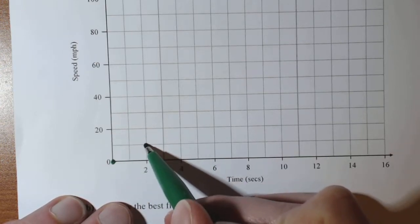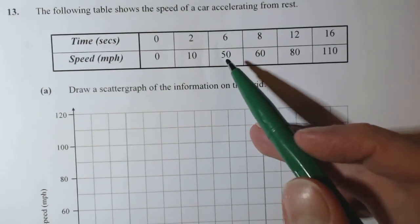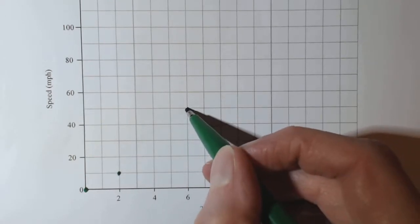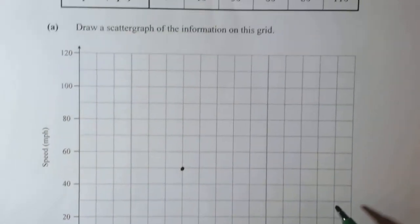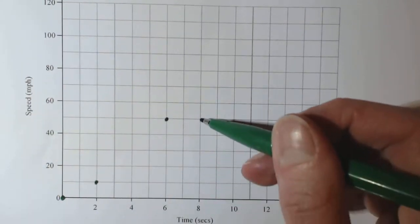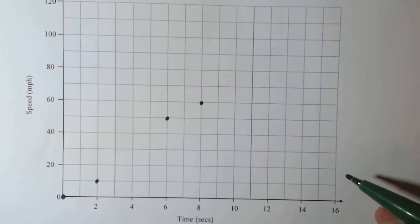So we then have at 6, we're going speed of 50 miles per hour. So we've got 6 here, we go up, that's right, 50. We then have at 8, it's going 60. So we look at 8, we'll go up, we'll say 60.